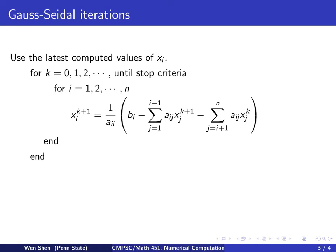Okay, so the main idea of Gauss Seidel iteration is use the latest computed value for xi's. So here's the algorithm.